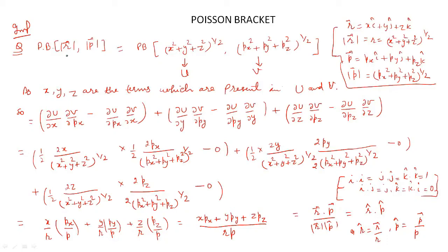Hello everyone. Today we will solve some more numerical problems related to Poisson Bracket. The first problem is that we have to calculate the Poisson Bracket of the magnitude of the position vector and the magnitude of the momentum.